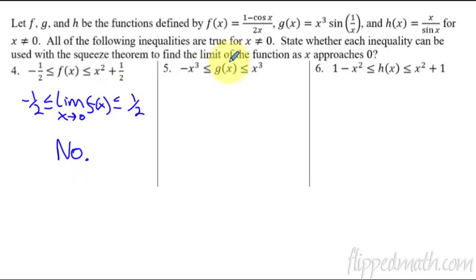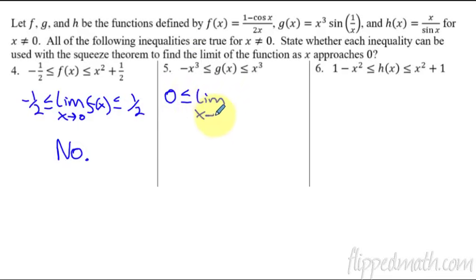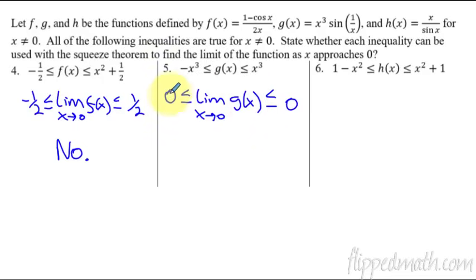So don't get confused — the limit of this function might still exist, we're just saying the squeeze theorem doesn't work to help us know what the limit is. For the next one, the limit of negative x cubed as x approaches zero is zero, and the limit of the upper function is also zero. So the limit as x approaches zero of g of x is squeezed between zero and zero. Since they're the same number, yes — we can use the squeeze theorem. This is how you show your reasoning and your justification.